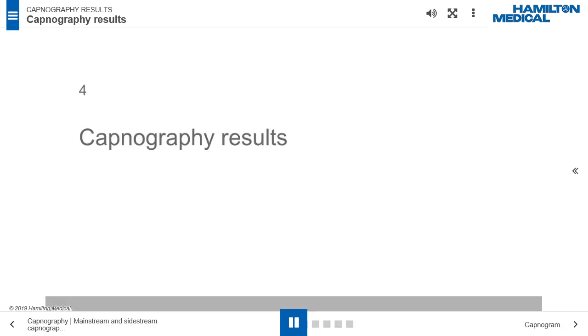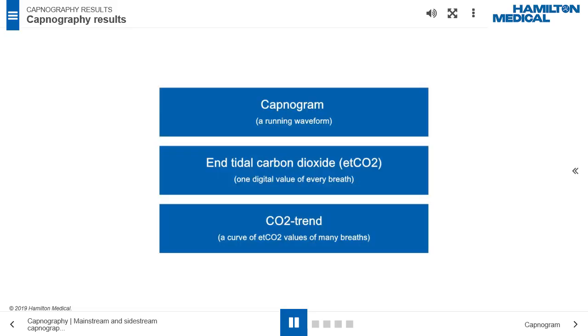Capnography results. This chapter introduces three forms of capnography results: A. Capnogram, B. End tidal carbon dioxide ETCO2, and C. CO2 trend display.